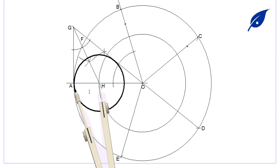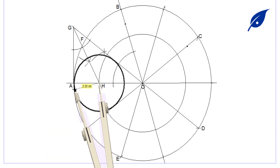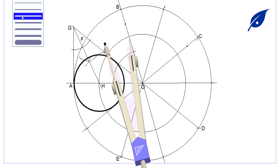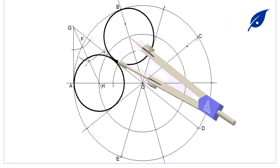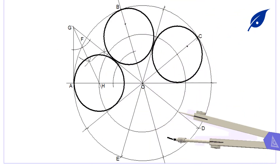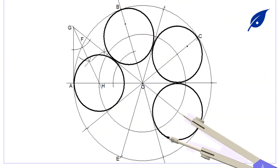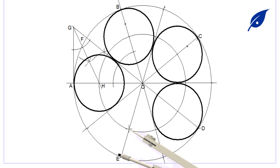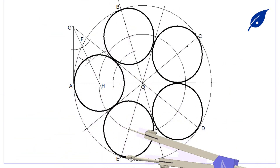Using this circle, we reproduce the other circles by bisecting the angle between each point — between B and C to get the next point, then at C, then at D, then at E. After doing this, we'll have the required number of equal circles within the large circle.